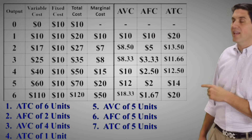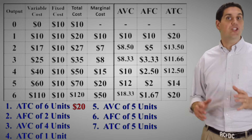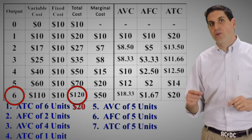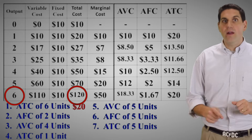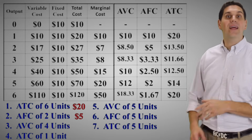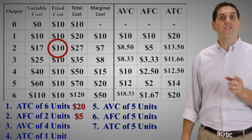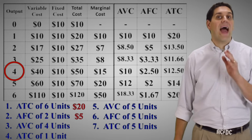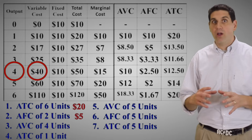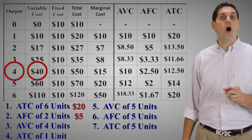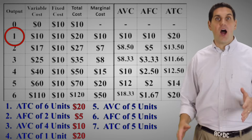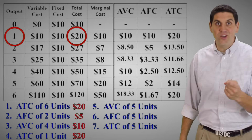Alright, the average total cost of six units is $20. That's because the total cost is $120 and we're producing six units — so if the total cost is $120 and you produce six units, how much did each one cost on average? Well, $20. The average fixed cost of two units is $5 — the $10 fixed cost divided by two units gives us $5. The average variable cost of four units is the $40 variable cost divided by the four units produced, so it's going to be $10. The average total cost of one unit is $20 — if one unit costs a total of $20, then on average that one unit costs $20.